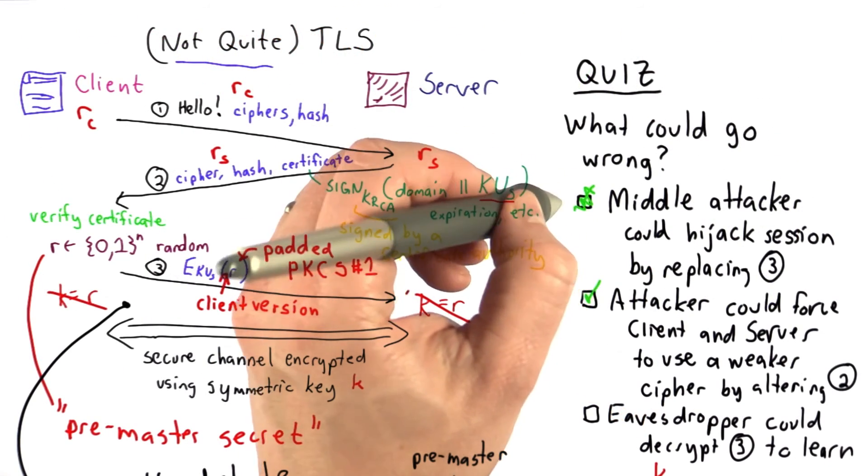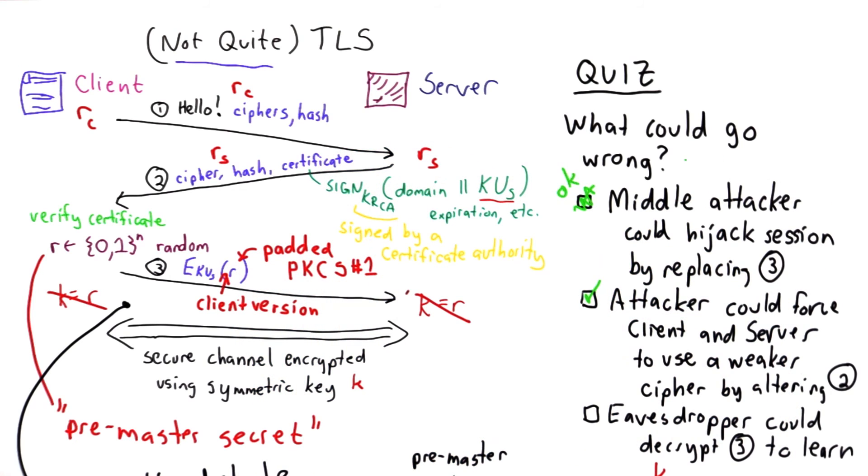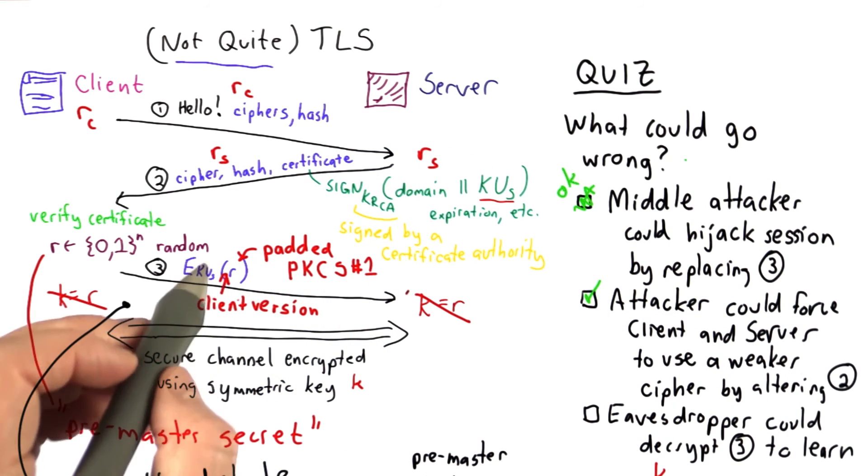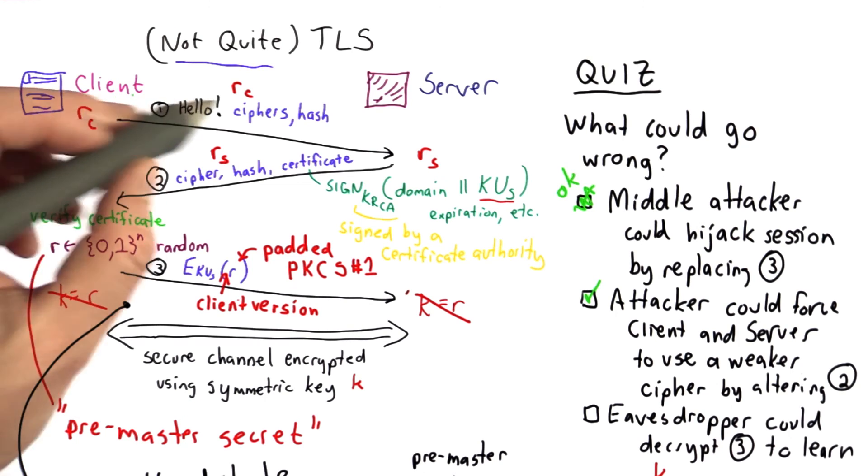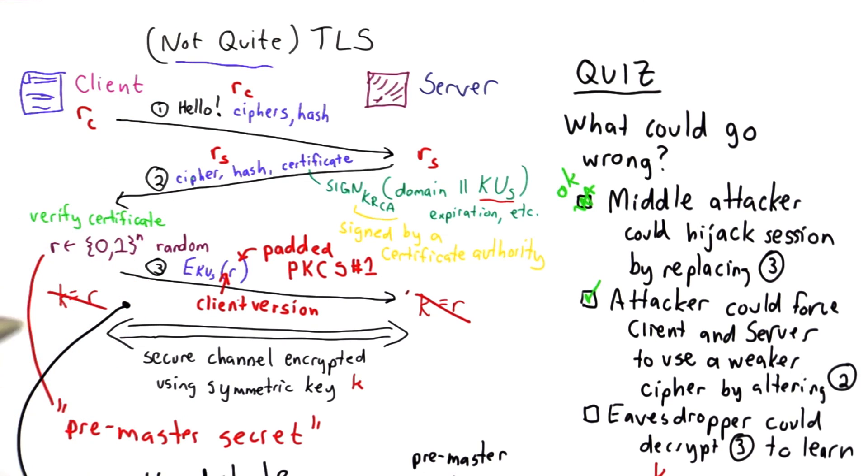So this fixes the first problem. Now there's no way for the middle attacker to hijack the session. If they tamper with this message, it will be detected when the final step, when the handshake finish is done using a key that depended on all these values. Depending on the random values here also prevents the replay attacks. Since new random values are used for each protocol execution, there's no way to replay it. The key depends on these values that were used previously.